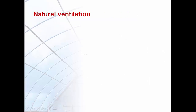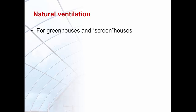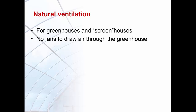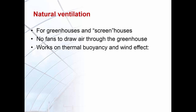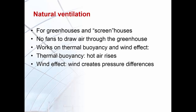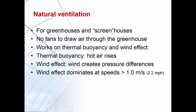Natural ventilation is the process of supplying and removing air through an indoor space without using mechanical systems. It refers to the flow of external air as a result of pressure or temperature differences. Used for greenhouses and screenhouses, these systems do not require fans. Natural ventilation works on thermal buoyancy and wind effect. Thermal buoyancy helps hot air rise due to reduced air density, while wind effect creates pressure differences. Wind effects usually dominate at speeds higher than 1 meter per second.